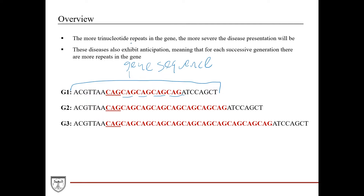The more repeats there are in the gene, the more severe the disease presentation will be, since it's shifting the reading frame even more. Versus if you just had one or two repeats — if you have five repeats, that's going to throw it off even more.